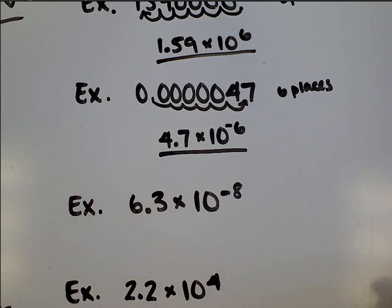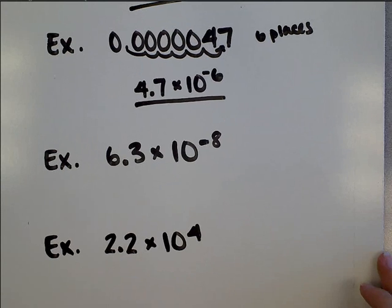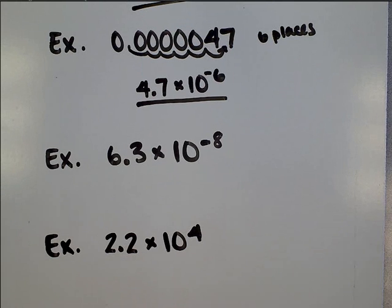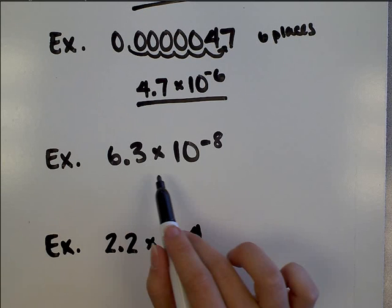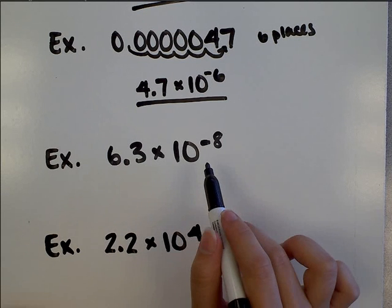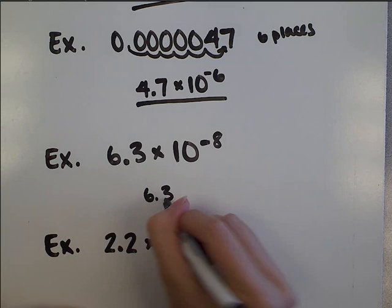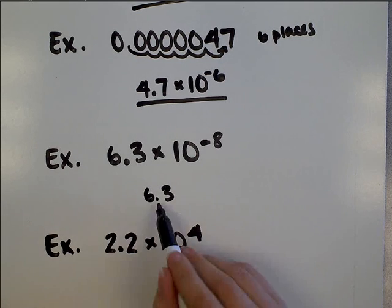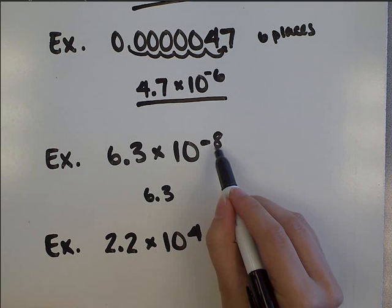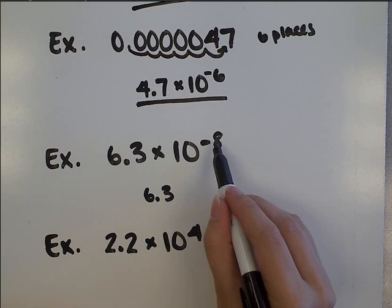Now let's do some examples where we're going to move from scientific notation into standard notation. So this one is 6.3 times 10 to the negative 8th power. I'm going to start by writing 6.3 here. And I know that I need to move this decimal point 8 places because that's my exponent right here.